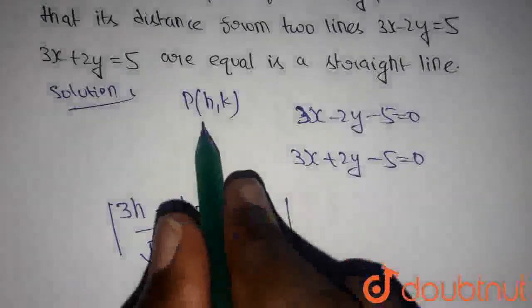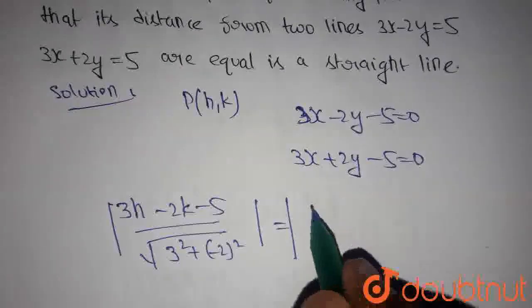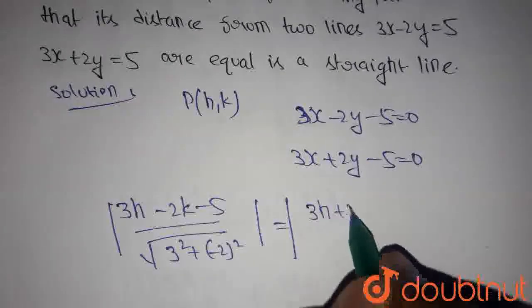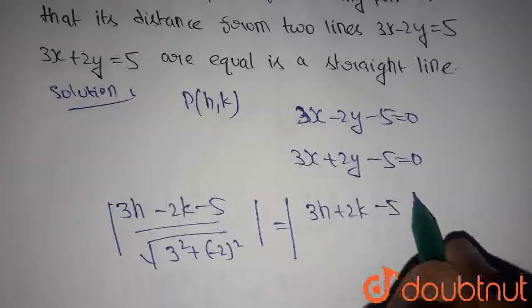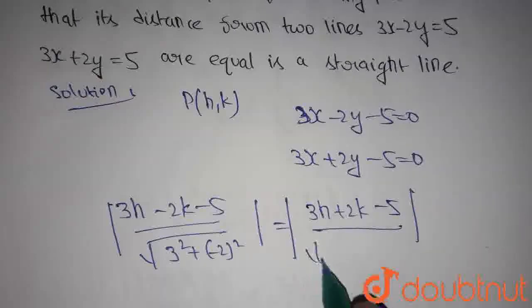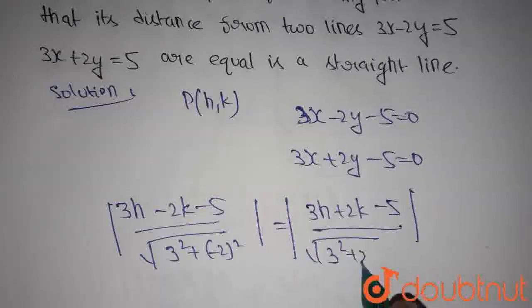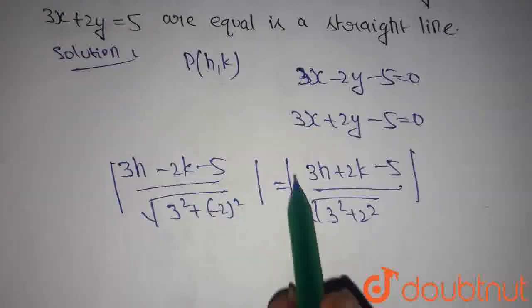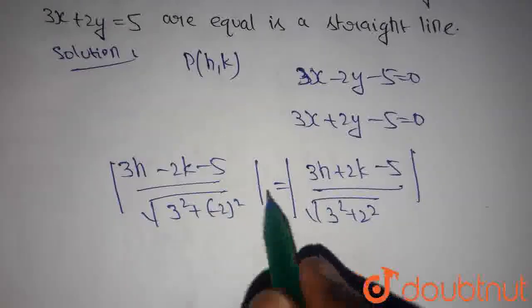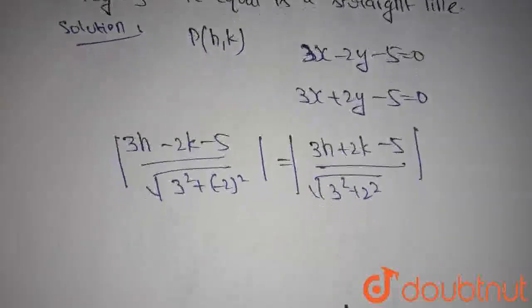Similarly, the distance of this point from this line is given by |3h+2k-5| divided by √(3²+2²). Since it is given that these two distances are equal, we take the equal sign in the middle.